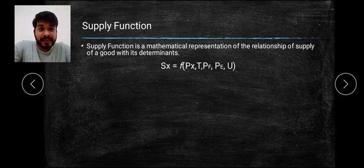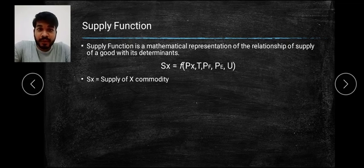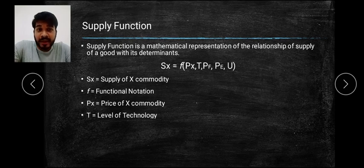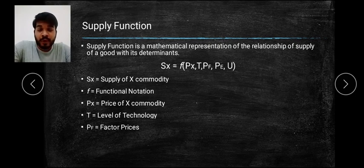Here you find that Sx equals F of Px, T, Pf, Pe, and U. All these factors included together form the supply function. Sx means supply of X commodity. F is a functional notation. Px is the price of commodity X. T is the level of technology. Pf is factor prices, also known as cost of production.